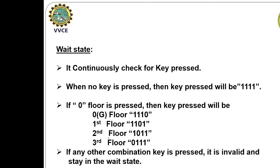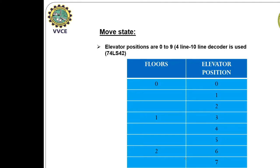If the requested floor is the same as the current floor, there is no need to move; the elevator remains in the wait state. Otherwise, it will move into the move state. In the move state, elevator positions range from 0 to 9. The interface unit uses IC 74LS42, which is a 4-line to 10-line decoder to indicate the elevator position.